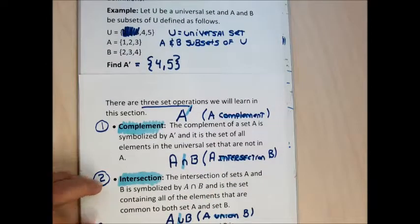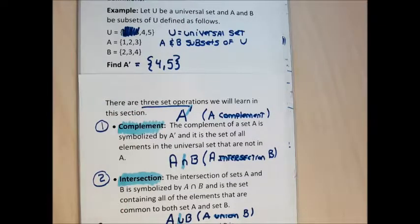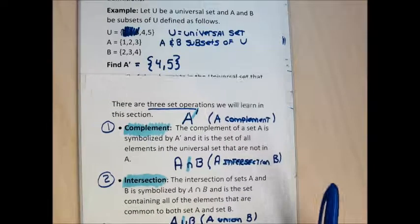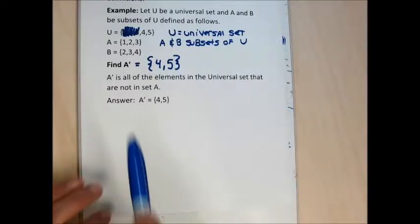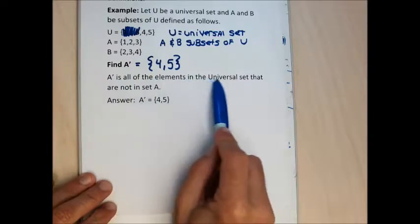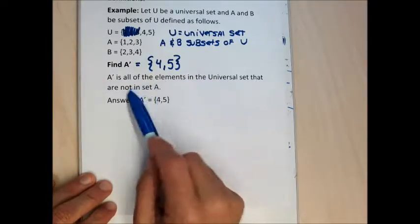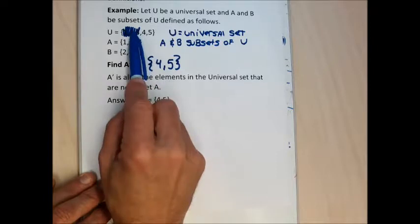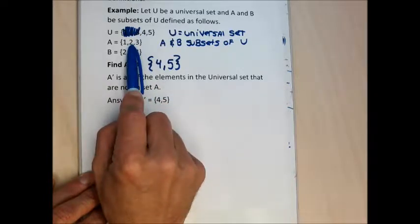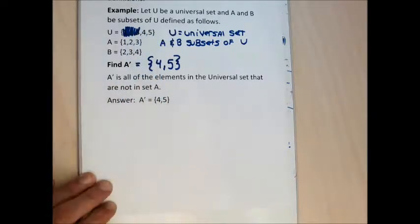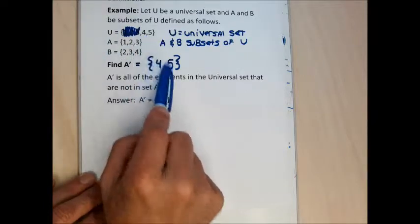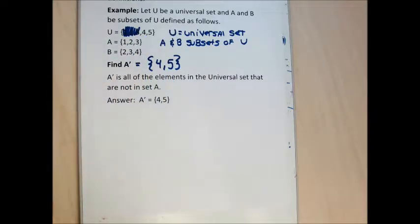Complement is a really easy operation. We have three set operations: complement is easy, intersection is easy, union can be a little tricky. A complement is all of the elements in the universal set that aren't in set A. 1, 2, and 3 are in the universal set but they're in set A, so they're not in A complement. 4 and 5 are in the universal set and not in set A, so that's what A complement is.